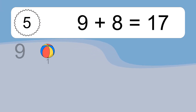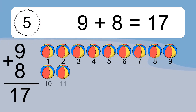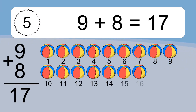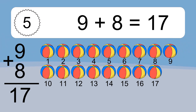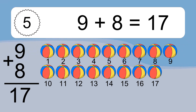9 plus 8 equals what? 9 plus 8 equals 17. Let's count it: 1, 2, 3, 4, 5, 6, 7, 8, 9, 10, 11, 12, 13, 14, 15, 16, 17.